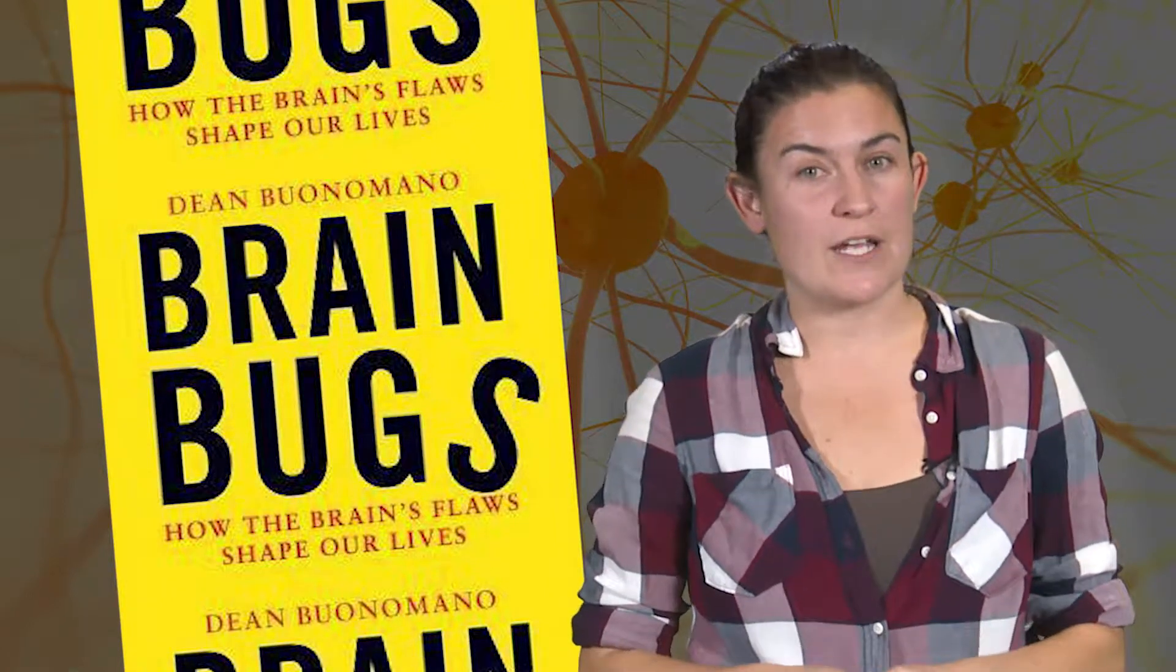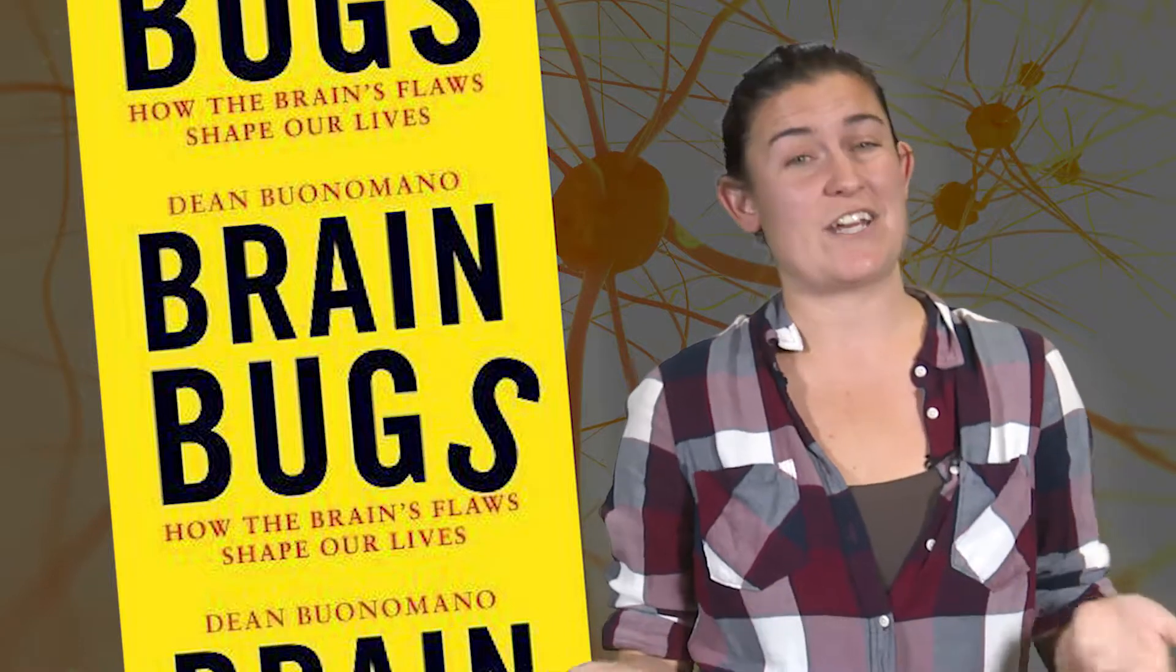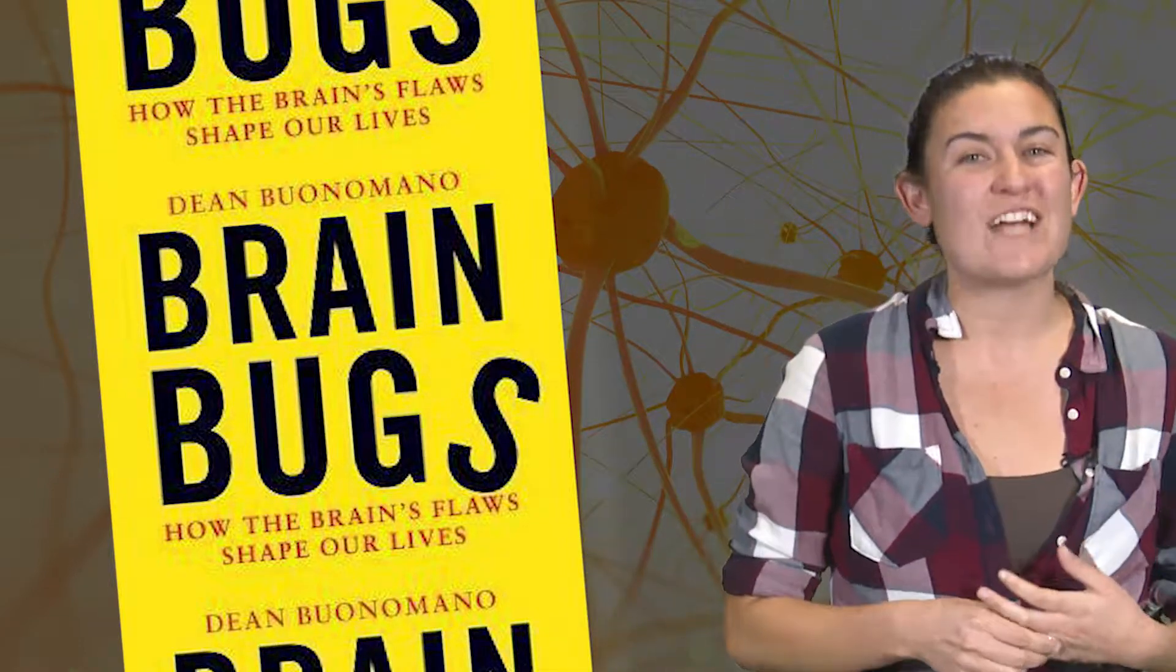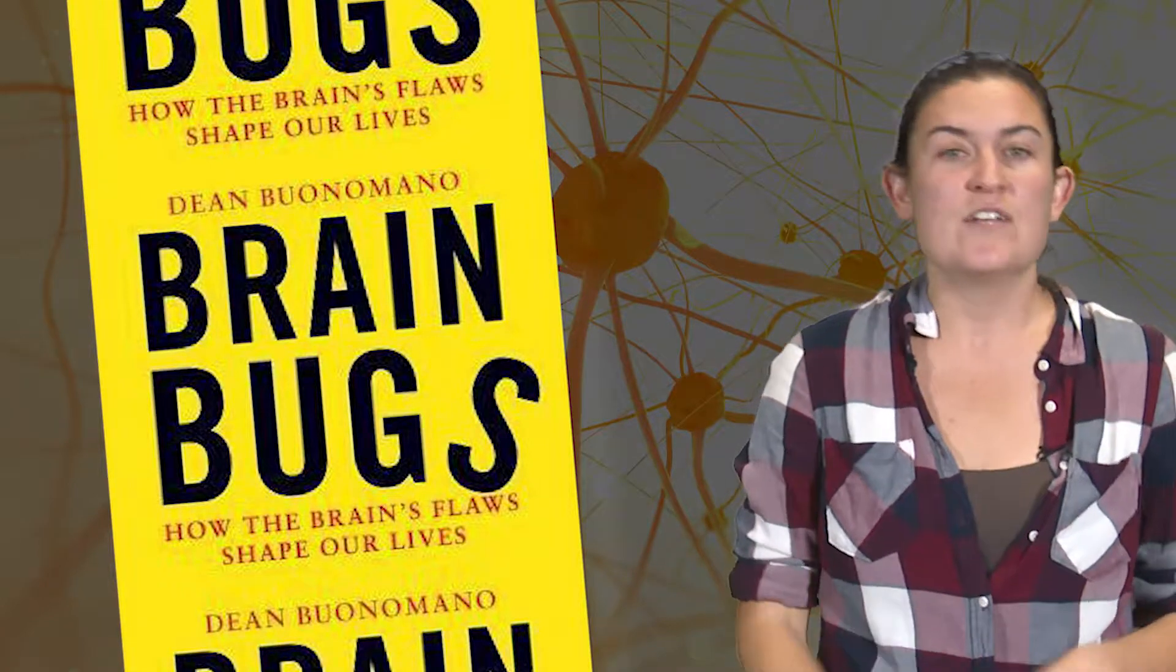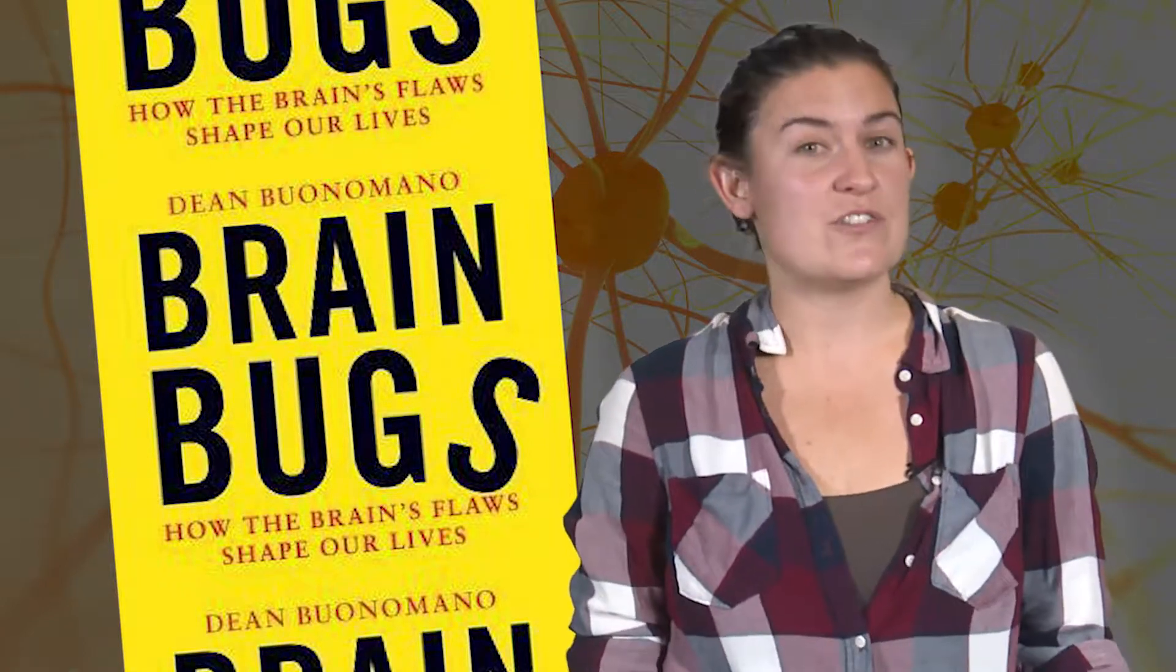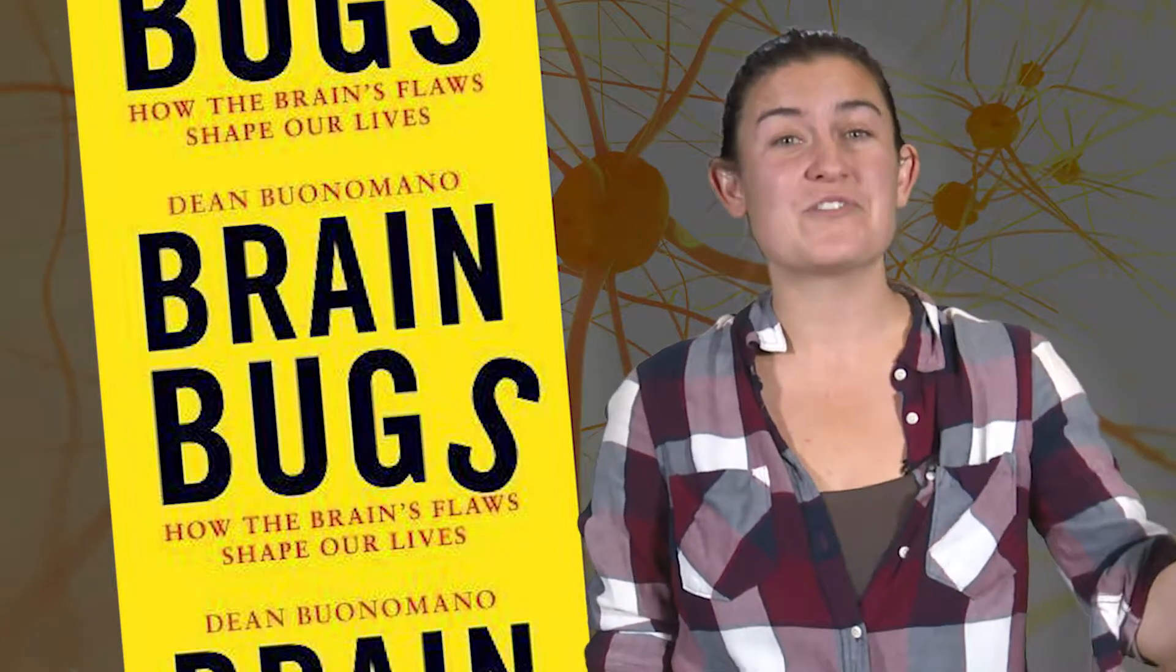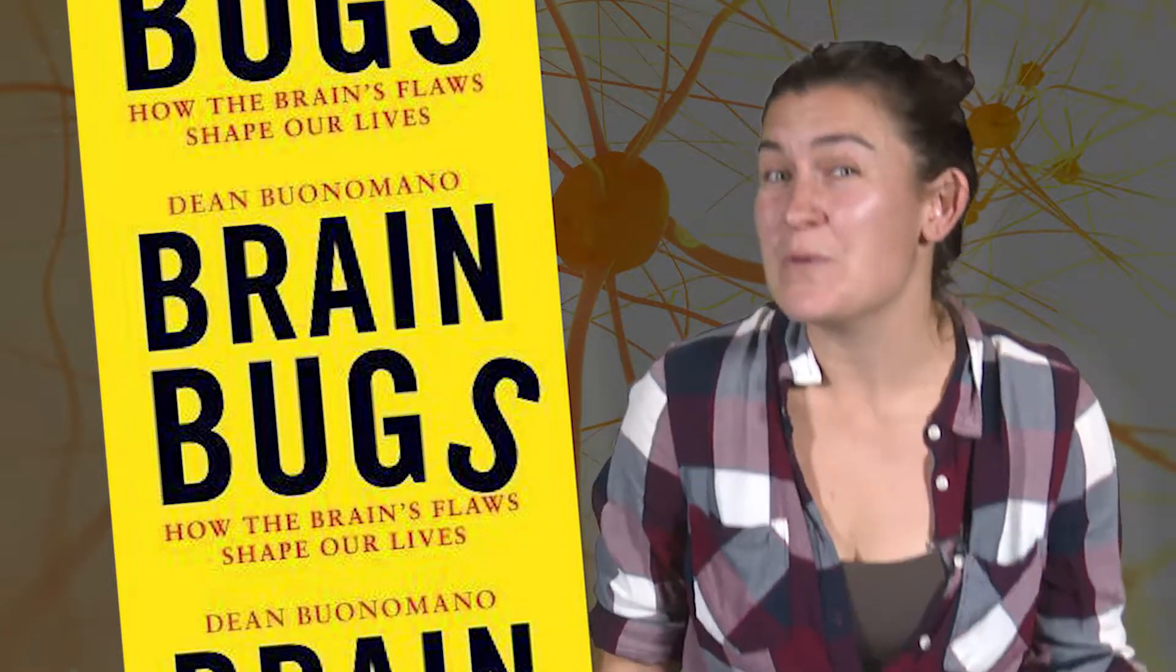So priming is a brain bug that can be used for good. Your teachers actually probably use priming when they're setting up their lesson plans. But it can also be used for less noble purposes than education. Politicians and advertisers use this trick to make you think about certain things as you walk into a grocery store or maybe even a voting booth.